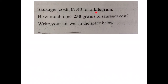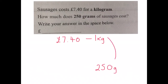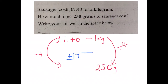Sausages cost £7.40 for a kilogram. How much does 250 grams cost? We're told that £7.40 will get you one kilogram and we have to work out the cost of 250 grams. 250 grams is a quarter of a kilogram, so divide the weight by four and divide the price by four. Four into seven goes once, decimal point in, bring three left over to the four: four into 34 goes eight times, two left over; four into 20 goes five times. So the cost for 250 grams is £1.85.